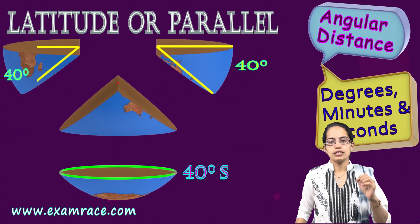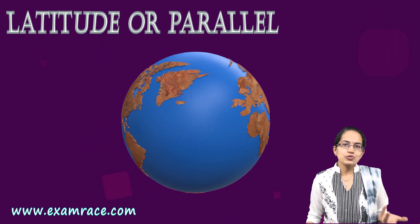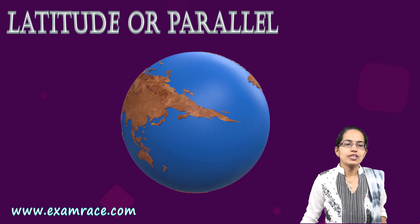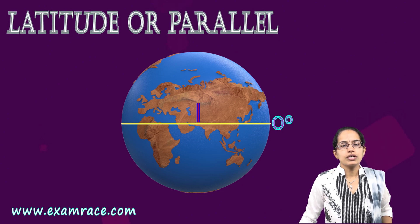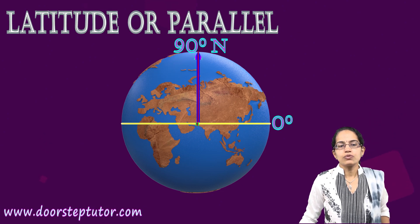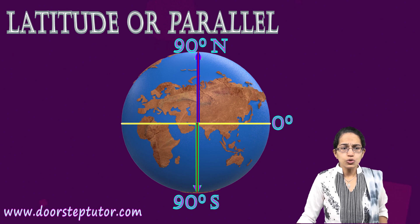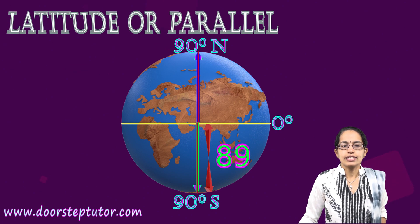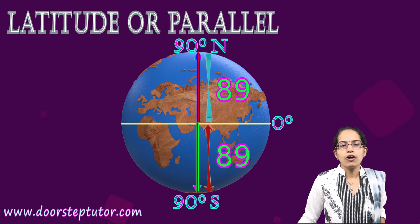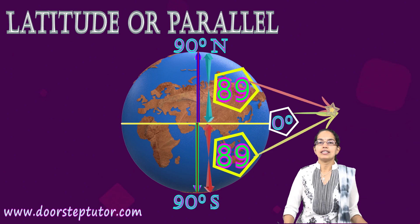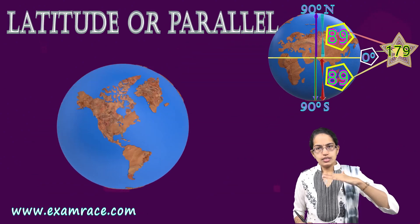Latitude is understood in degrees, minutes, or seconds, measured north and south of the equator. In total, there is one equator at zero degrees, then 89 lines going north up to 90 degrees north, and 89 lines going south up to 90 degrees south. So in total there are 179 parallels.